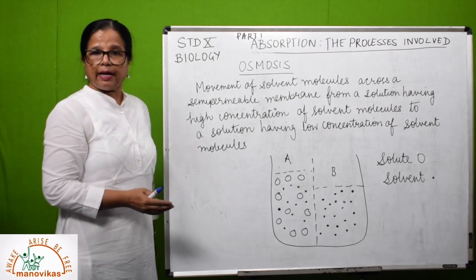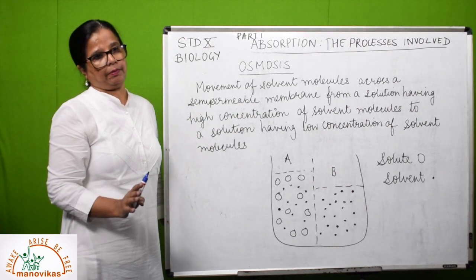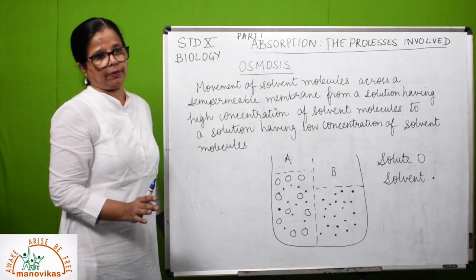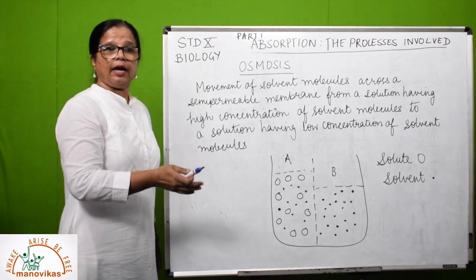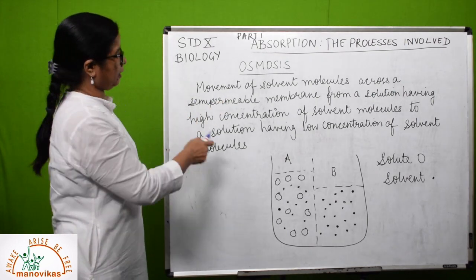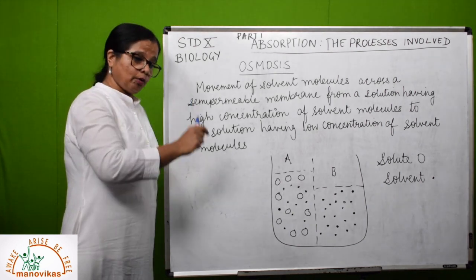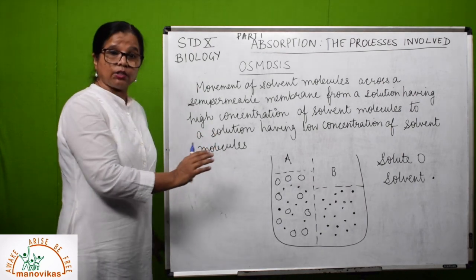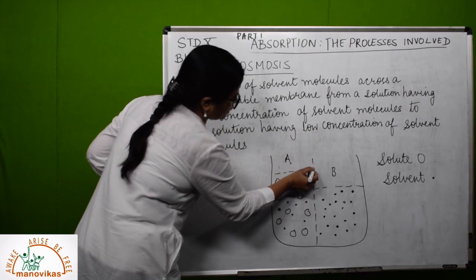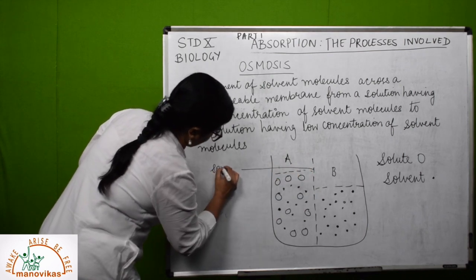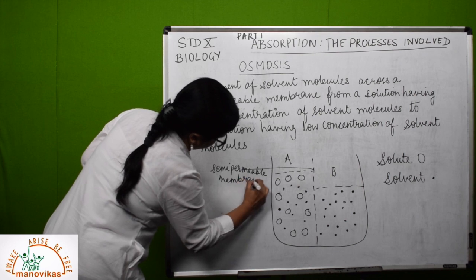Examples of semi-permeable membranes include parchment paper, cellophane paper, goat's bladder, and egg membrane. A muslin cloth, rubber sheet, or plastic sheet cannot be a semi-permeable membrane. In osmosis — comparing it with diffusion — the solutions are separated by a semi-permeable membrane, whereas in diffusion there is direct contact. In osmosis, the solvent molecules move through this membrane from their region of high concentration to their region of lower concentration.